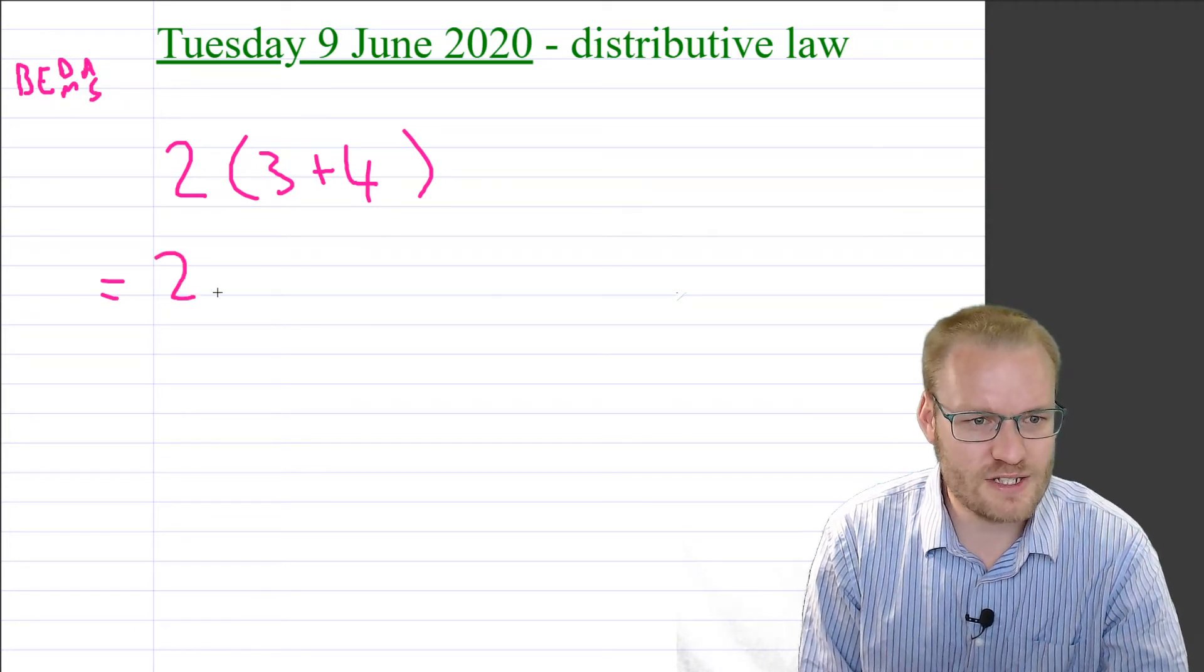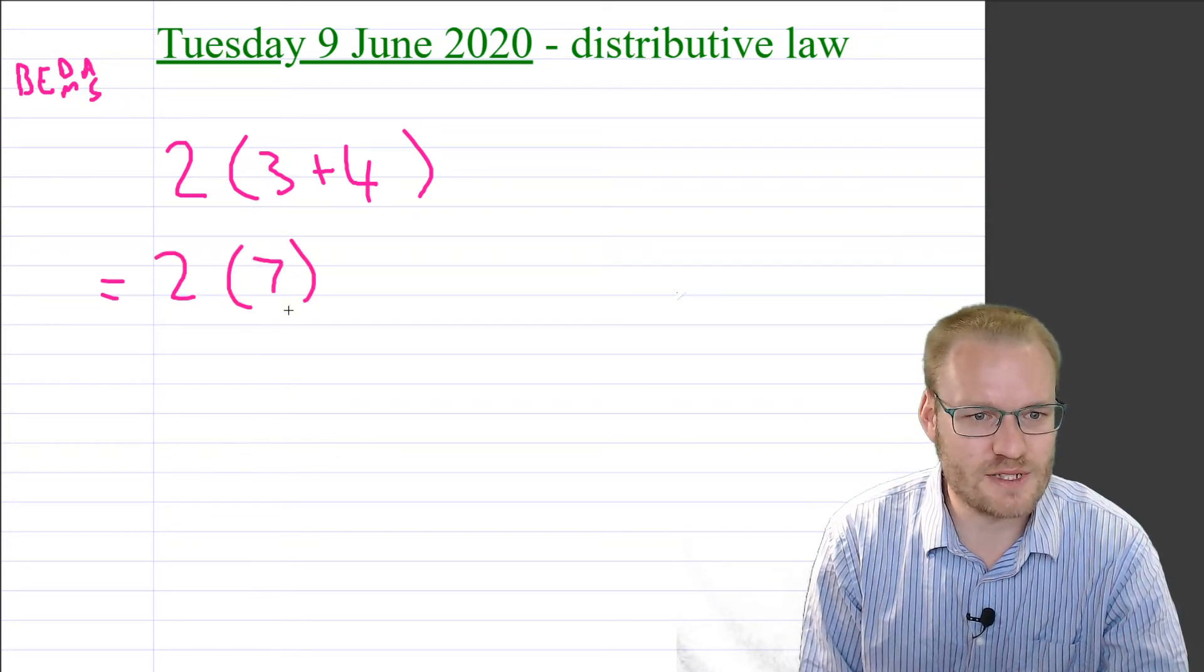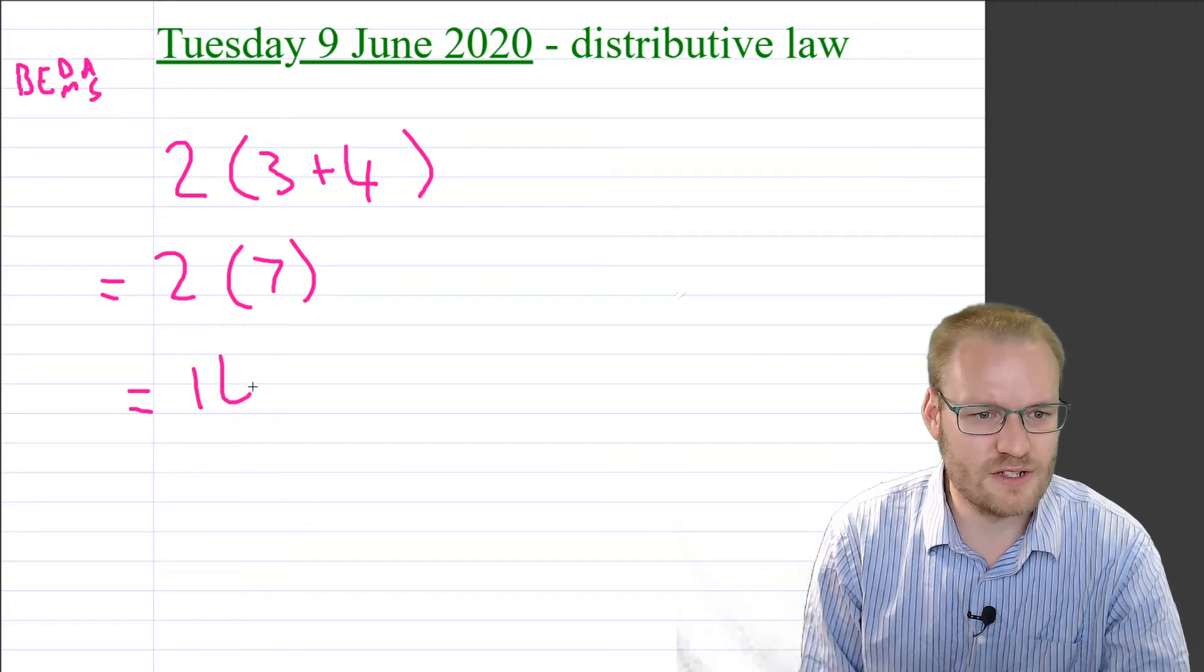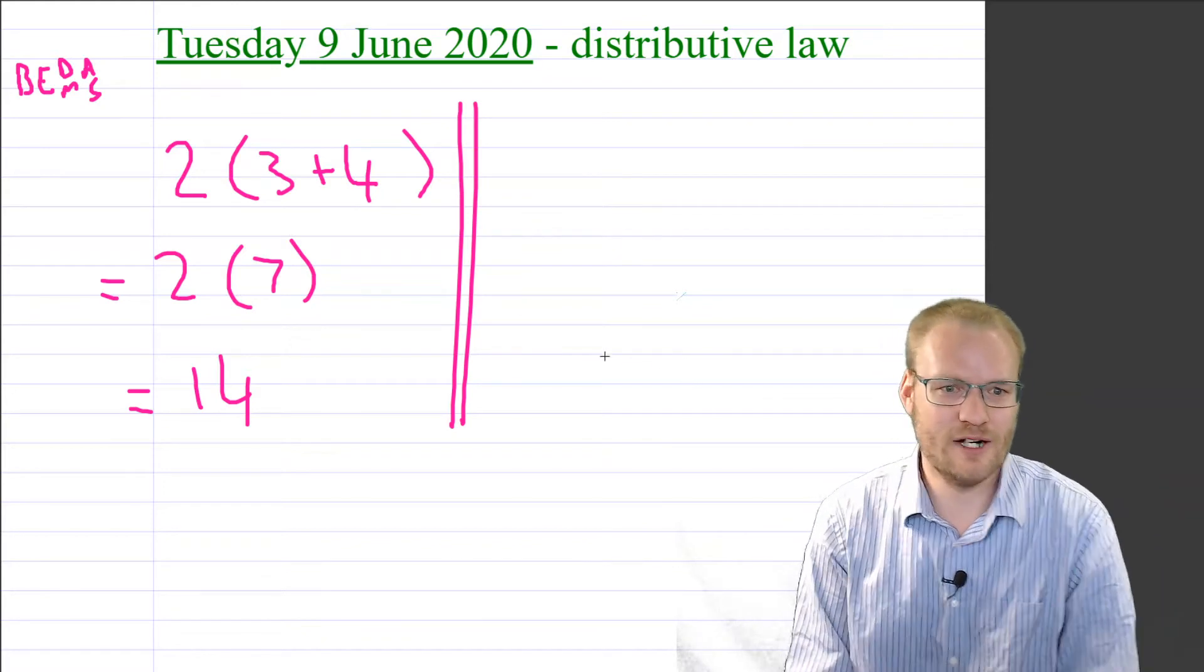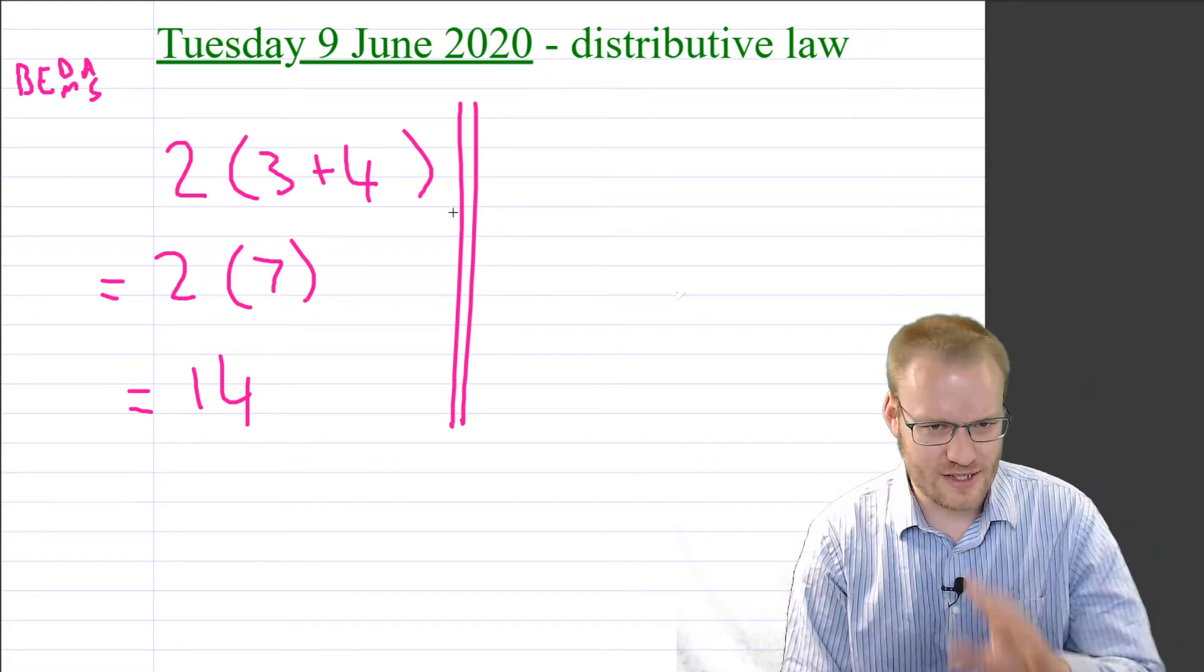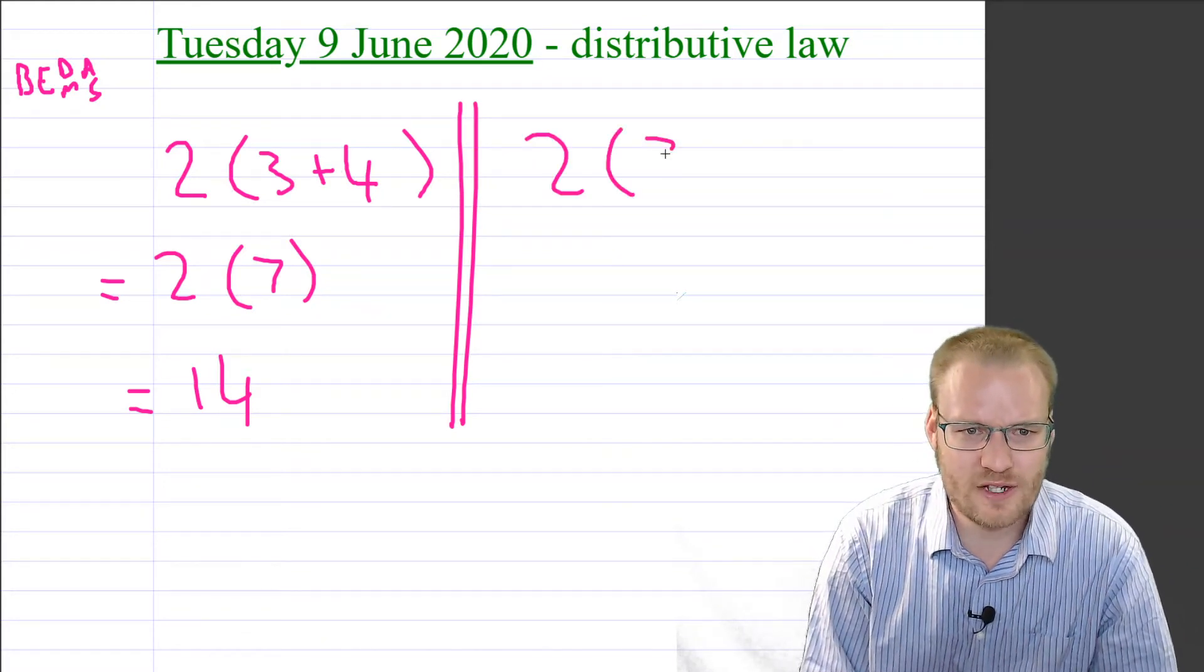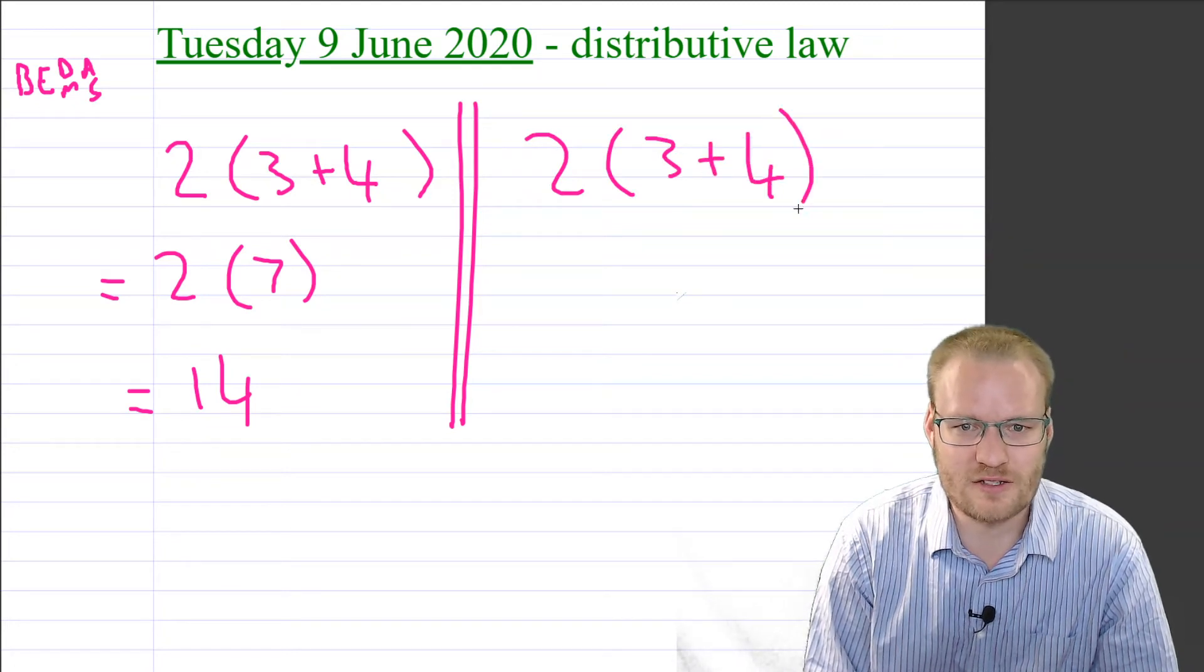Brackets first you said, great stuff, that's the same as 2 times 7, 2 times 7 is 14. But I'm going to show you a new way and this is going to help us when these have got x's and things in there. So, okay, 2 into 3 plus 4.